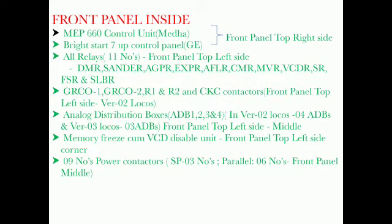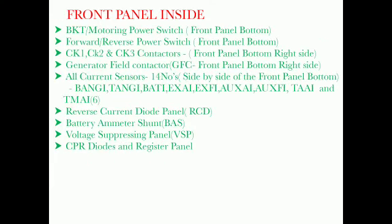Version 3 locos have 3 ADBs. Front panel top left side middle: Memory Freeze and VCD Disable Unit. Front panel top left side corner: Power Contactors — total number of power contactors are 9. SP3, Parallel Contactors 6. Front panel inside: BKT — Monitor Power Switch. Forward and Reverse Power Switch. CK1, CK2, CK3 contactors, front panel bottom right side.